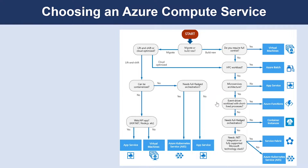If you are trying to build an application based on an event-driven workload with a short-lived process, Azure Functions and Logic Apps can come into play. Within a new environment, if you need full-fledged orchestration, that's where you would choose ACS. And if you need .NET integration or a fully supported Microsoft technology stack, you would tend to choose Service Fabric.